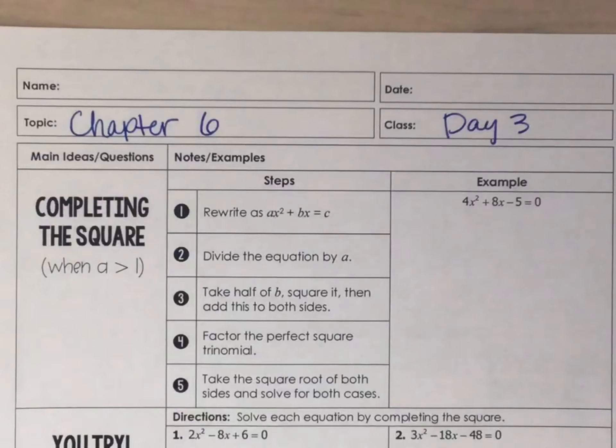Now what we're going to do is we're going to factor this perfect square trinomial. We have x squared plus 2x plus 1. The only way to multiply and get 1, add to get 2, is if both my factors are 1. So this perfect square trinomial is x plus 1 squared equals 9 over 4. So that was step 4.